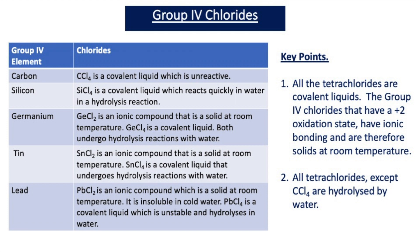In this video, we're going to look at the chlorides of group 4. This table shows the different chlorides that exist in group 4. It tells you the type of bonding that's present in each of these chlorides and whether they react with water or not. Carbon exists as CCl4, carbon tetrachloride, and carbon tetrachloride is a covalent liquid which is unreactive.